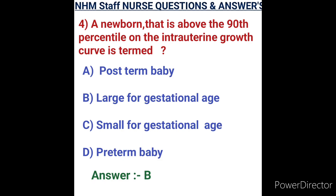Question number four: a newborn that is above the 90th percentile on the intrauterine growth curve is termed. Options: A) post-term baby, B) large for gestational age, C) small for gestational age, D) preterm baby. Intrauterine growth curves are the standard for assessing the growth of preterm infants and are widely used in newborn ICU settings. Option B is the correct answer: large for gestational age.